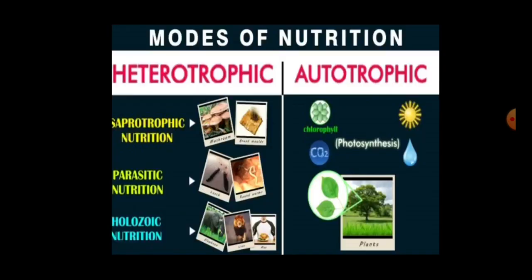Autotrophic mode of nutrition is shown by those organisms which can prepare their own food by the process of photosynthesis, in the presence of chlorophyll, carbon dioxide, water, and sunlight. In heterotrophic mode of nutrition, organisms cannot prepare their own food but depend on other organisms for food — they do not have chlorophyll in their body. Heterotrophic mode of nutrition is further divided into three parts: saprophytic nutrition, parasitic nutrition, and holozoic nutrition.